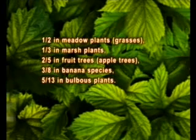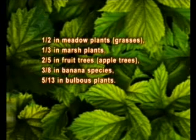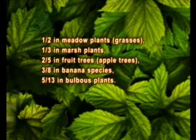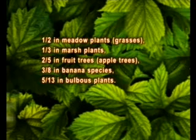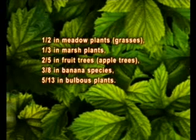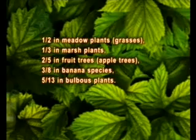Fractions peculiar to some plants are as follows: one over two in meadow plants and grasses; one over three in marsh plants; two over five in fruit trees, such as apple trees; three over eight in banana species; and five over thirteen in bulbous plants.